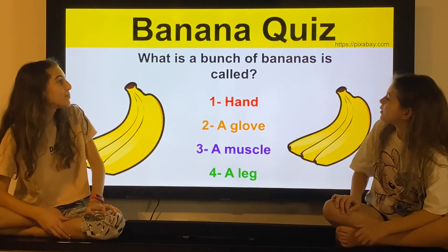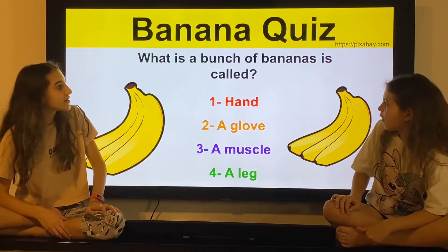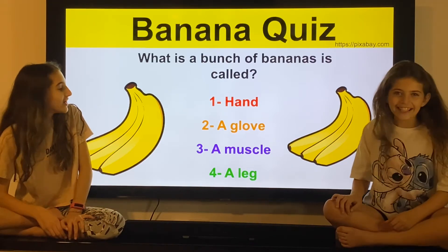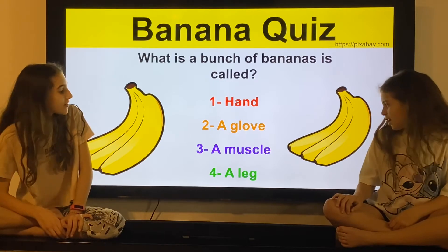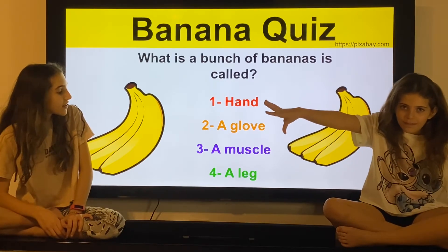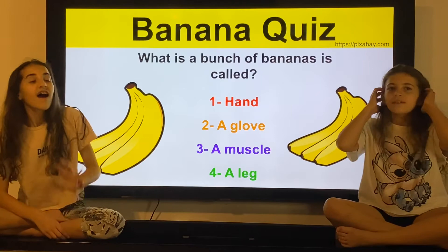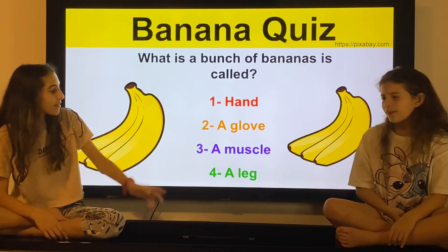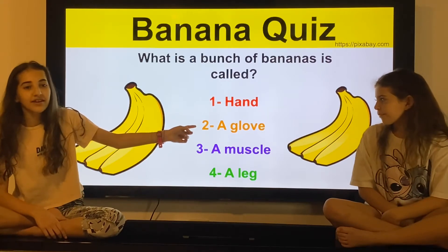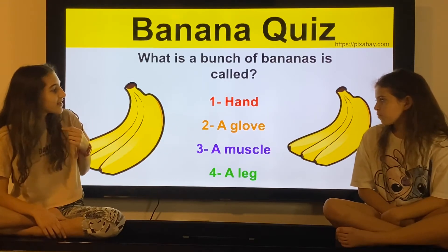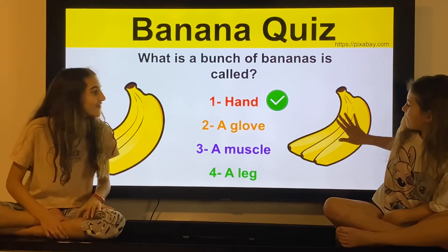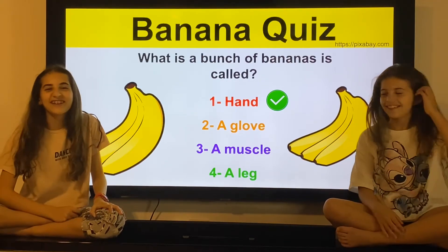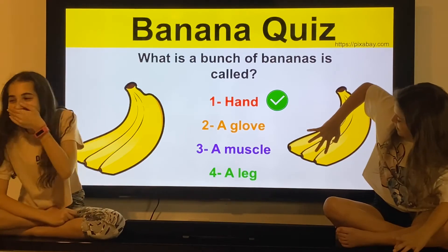What is a bunch of bananas called? It's called... a hand, a glove, a muscle, a leg. I'm going to say a hand. I'm going to say a glove, I don't know why. A hand — it kind of looks like a athletic finger. This is weird though. Fingers. No. Next question.